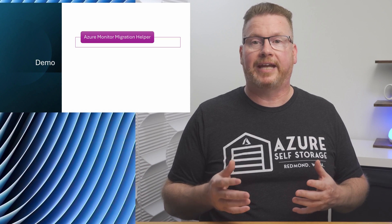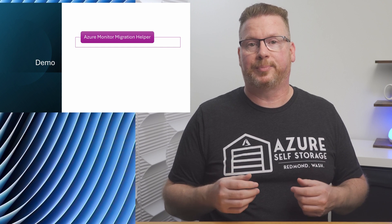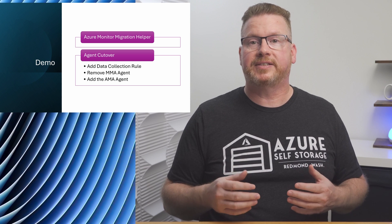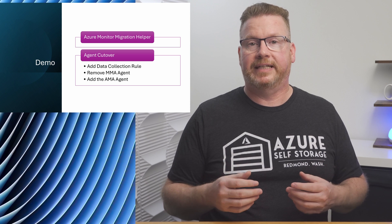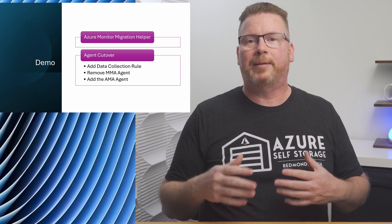Coming up, we're going to start by reviewing the Azure Monitor agent migration helper. This tool lets us discover agents we need to migrate and track the progress. Then we'll do an agent cutover on the host pool. The first step is to create a data collection rule for AVD insights, then remove the legacy agent and add the new Azure Monitor agent. There's no demo for the second option of sending data to two log analytics workspaces - if that's the path you're taking, check out my previous videos on configuring the new Azure Monitor agent, which covers the steps to create a new workspace and onboard session hosts with the new agent.